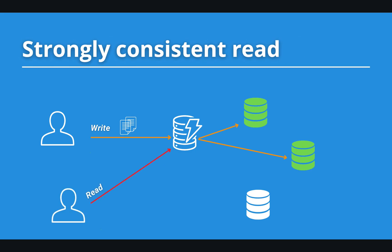The second option is strongly consistent read. Paul has started saving but has not finished yet. When Adrian asks DynamoDB for data this time, DynamoDB will wait until it has replicated the data to all data centers, and then return the result of Adrian's query. This time Adrian receives the newest data, but the request is much slower because it had to wait for DynamoDB to complete the previous action.